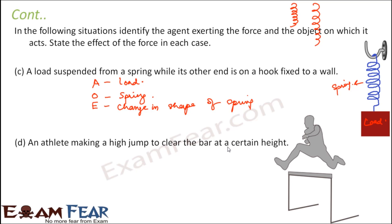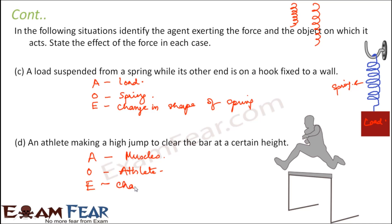Next: an athlete making a high jump to clear the bar at a certain height. The agent exerting force is the muscles of the athlete. The object is the athlete himself, because the muscles exert force on the athlete causing him to move. The effect is a change in state of motion — the athlete is jumping, so the way he was moving is changing due to the application of this extra muscular force.